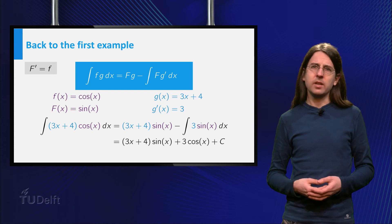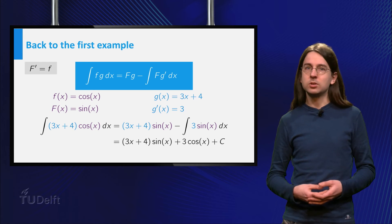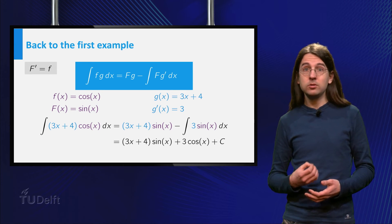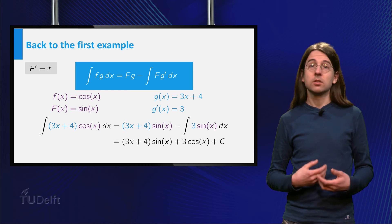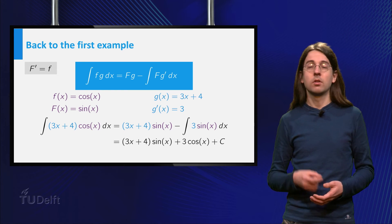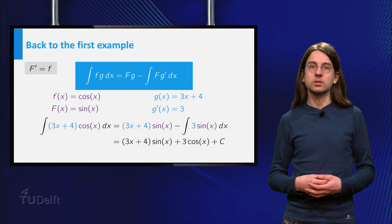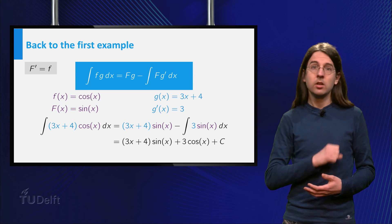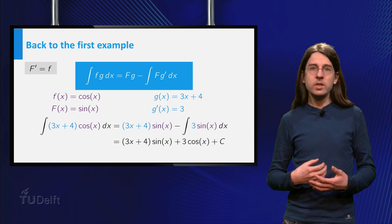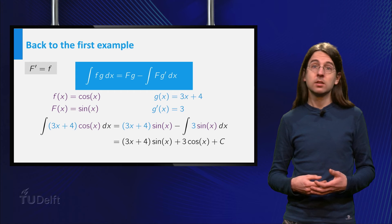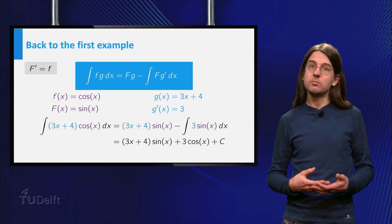Whenever you want to apply integration by parts, the goal is to ensure that the new integral is simpler than the original integral. If you are calculating an integral and want to use integration by parts, there are several choices you have to make. First, you need to decide how you write the original integrand as a product of two functions. Secondly, you need to choose which of the two functions plays the role of g and will be integrated.